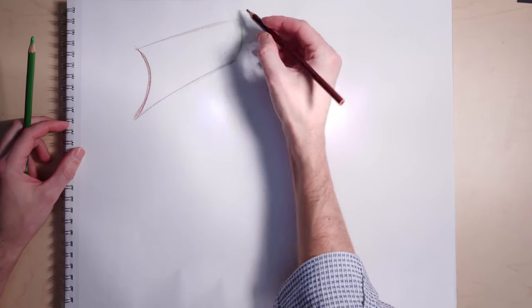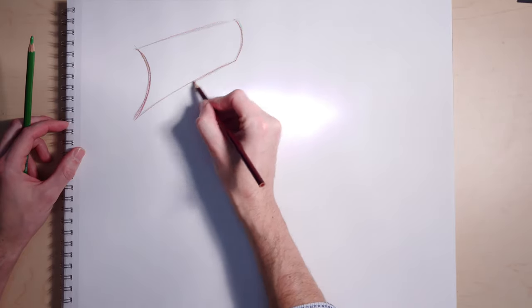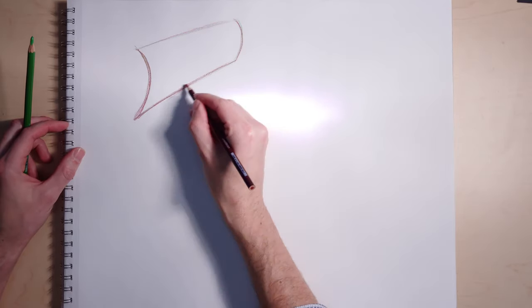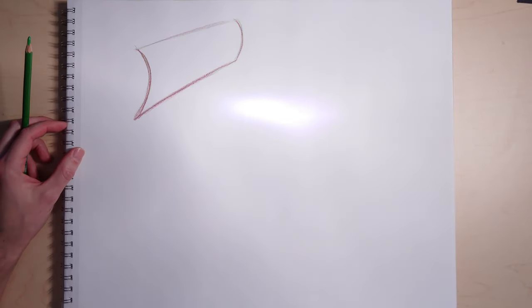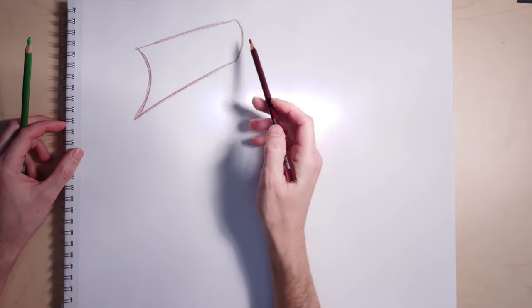What I like to do, especially when I'm practicing, trying to get better, trying new things, I like to use two different materials. In this case, I'm using a fairly light color pencil, in this case a light green, and then a darker red color pencil.